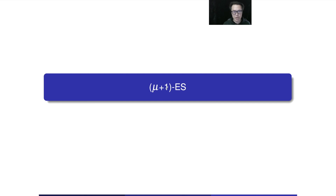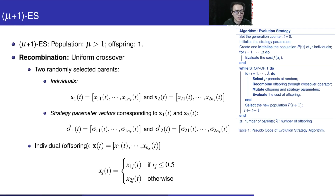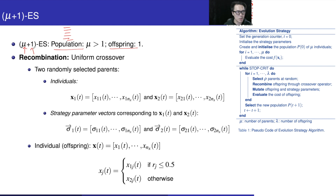Now I'm going to talk about another variation of the evolution strategy. We call this mu plus 1 ES. We have to understand what it means by mu plus 1. Mu refers to the population, meaning we are going to have more than one individual in the population. If mu equals 1, then mu plus 1 is reduced to 1 plus 1 ES. The offspring count is 1, indicating how many offspring we are going to generate.